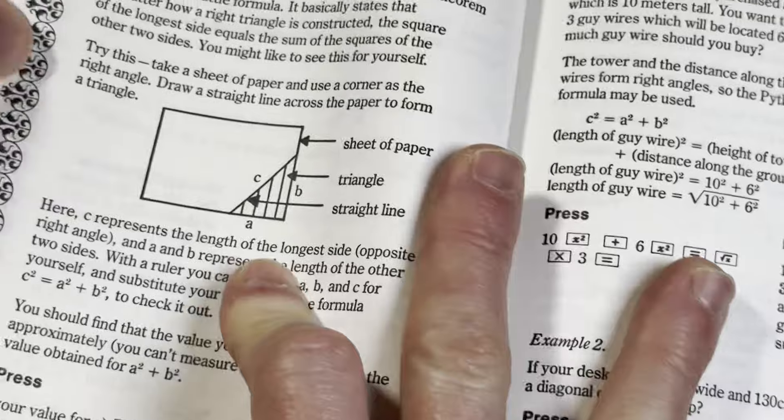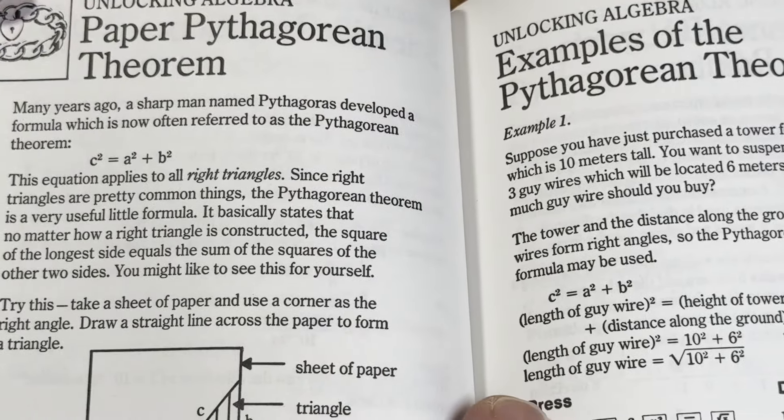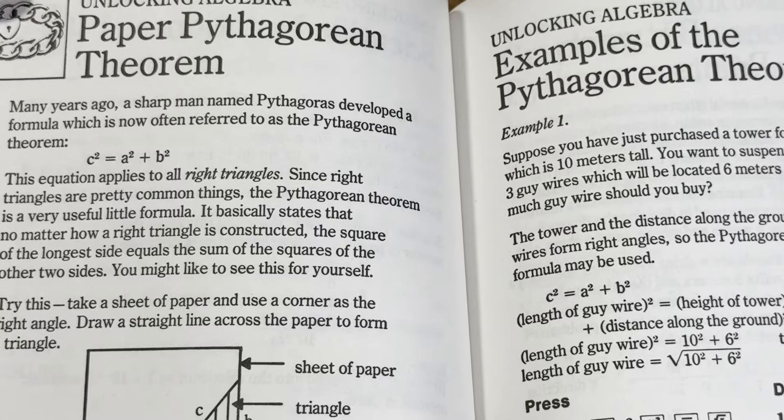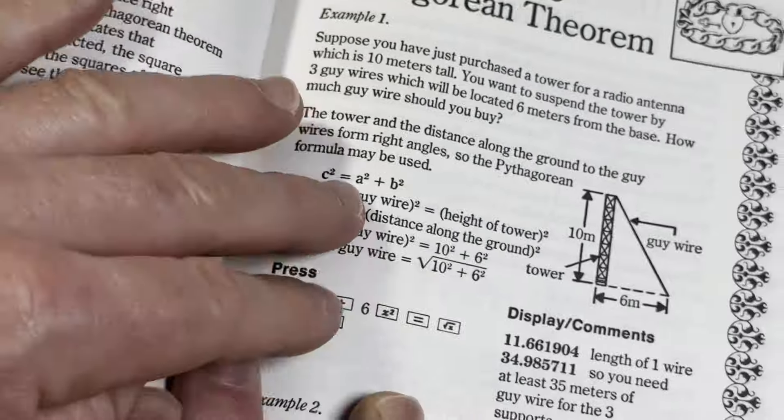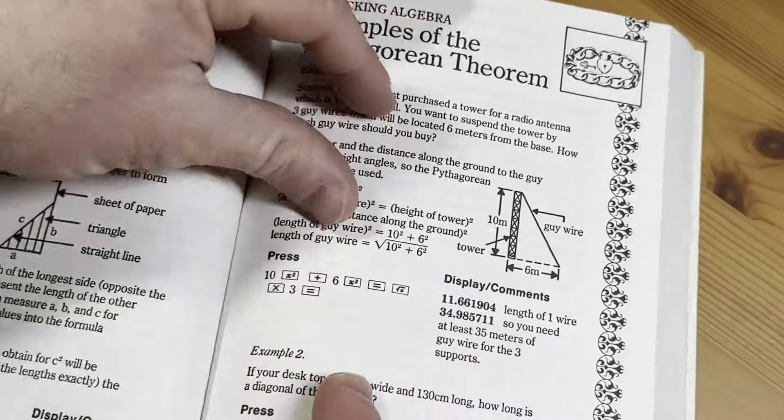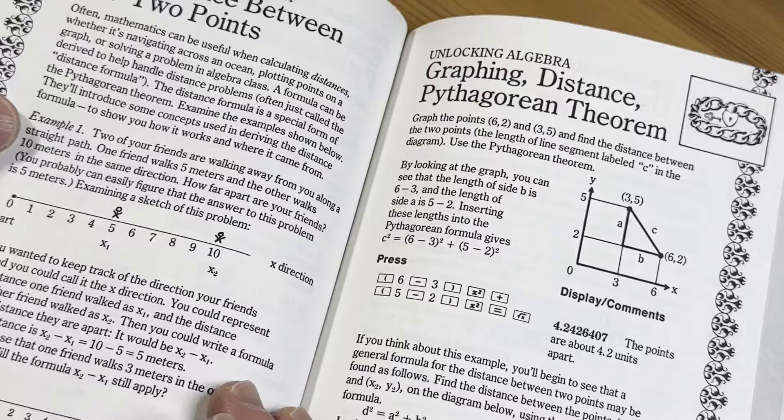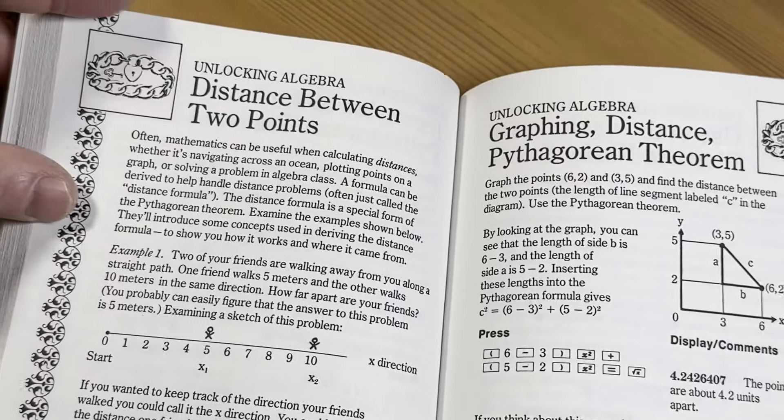If you go to unlocking algebra, Pythagorean theorem it says. Cool, they give you an example. Yeah, so they basically give you examples, and they show you how to use the calculator to work through them. Distance between two points. Cool, right?